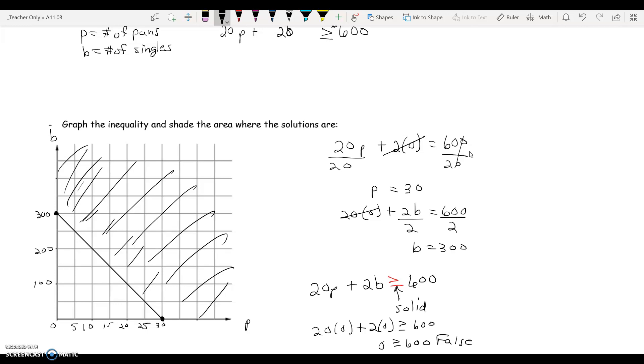So anything up in this shaded region or anything on the line would be a solution. For instance, right here, this point, 15 comma 150.